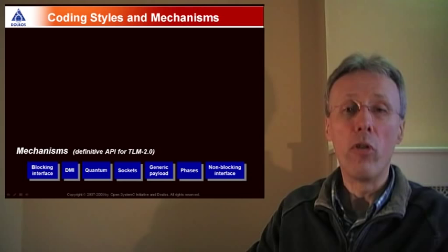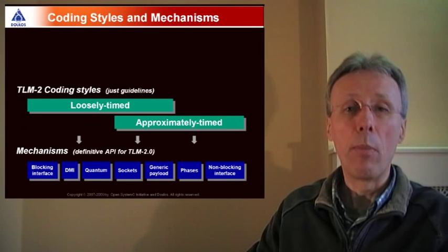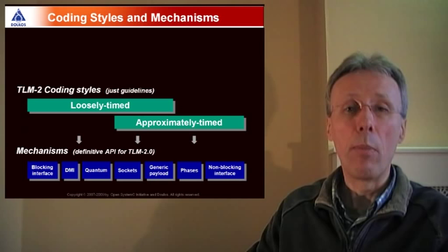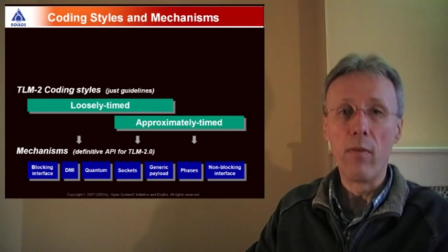Layered on top of these mechanisms are a couple of coding styles, the loosely timed and the approximately timed coding style. The coding styles are not normative, they're just coding guidelines helping to make best use of the API. So the coding styles themselves are not necessary for interoperability.